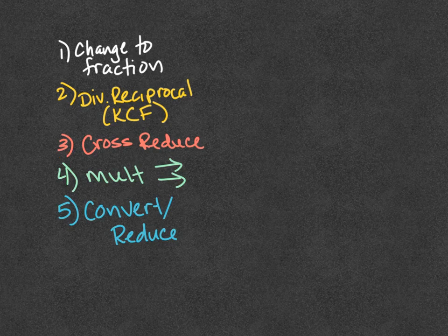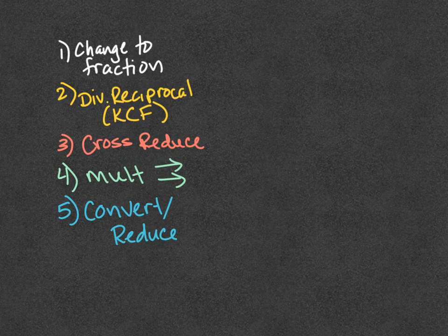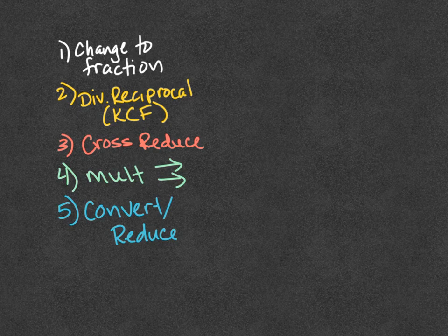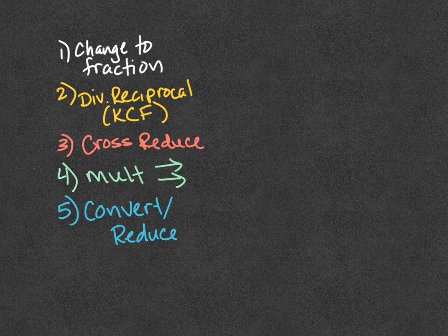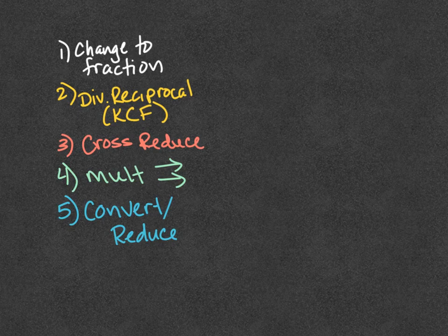Then we go to step 3, cross-reduce. That's the same as multiply. Then multiply straight across. That's the same as multiply. Then convert, if it was an improper fraction, back into a mixed number by dividing bottom into top. Remainder is the numerator. And reduce the fractions if needed. That's the same as multiply. All these steps, number 1, number 3, number 4, number 5, were the same as multiply, just the KCF was the only change from multiply to divide.